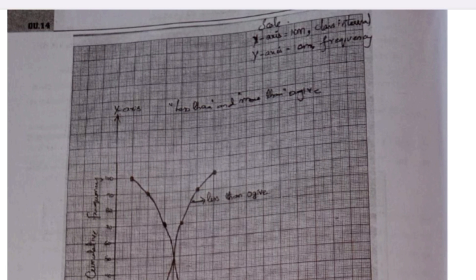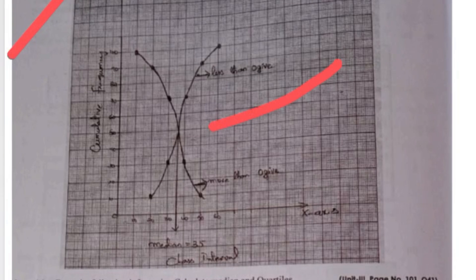Here you need to do the graph diagram in the examination. The invigilator will provide you the graph. Then you need to give whatever they asked, like ogive curves or pie diagram, you need to do like that.